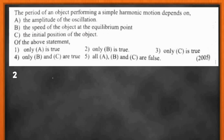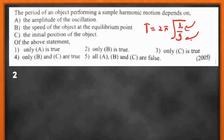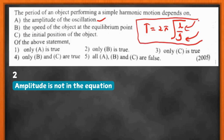This question is very similar to the previous one. The period of an object performing simple harmonic motion depends on... and we are given three statements to evaluate. For this, we need the equation: T = 2π√(L/g), where L is the length and g is the acceleration due to gravity. The first statement says the period depends on the amplitude of oscillation — we don't see amplitude in this equation, so amplitude doesn't affect the time period.